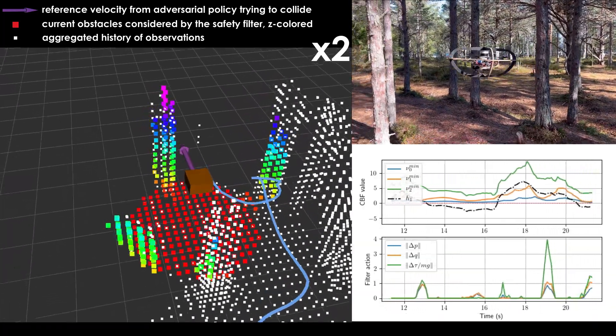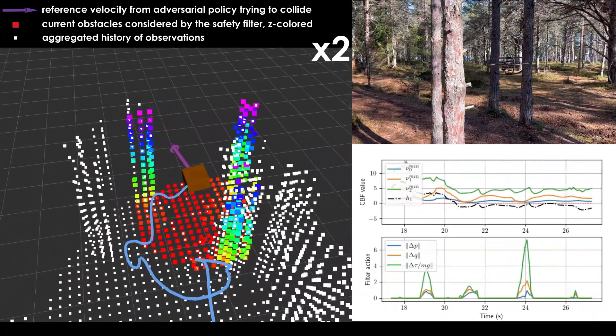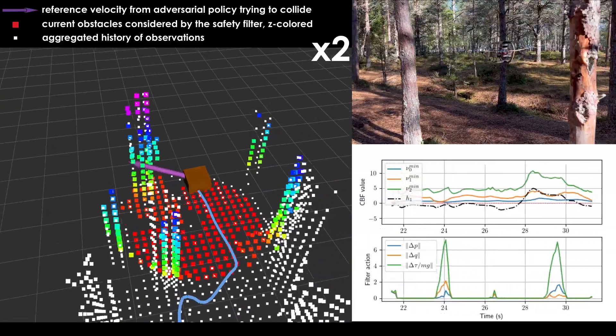The safety filter corrects the commands of a reference controller, altering the body rates and thrust rate to prevent collisions with obstacles.